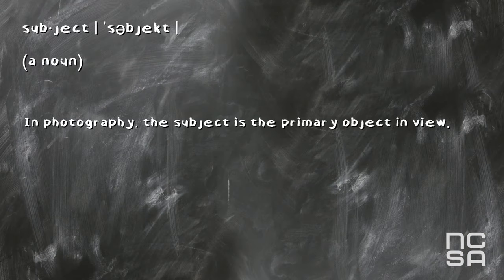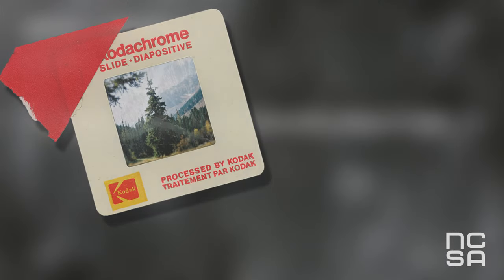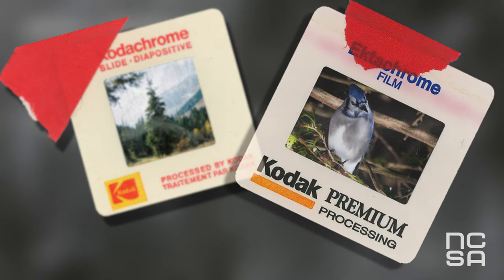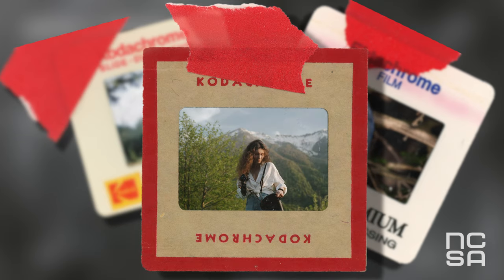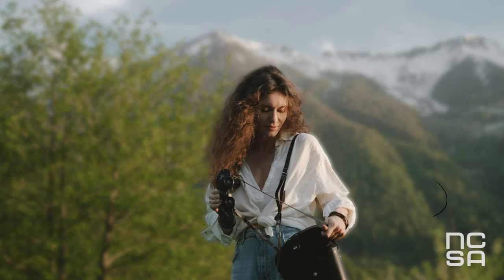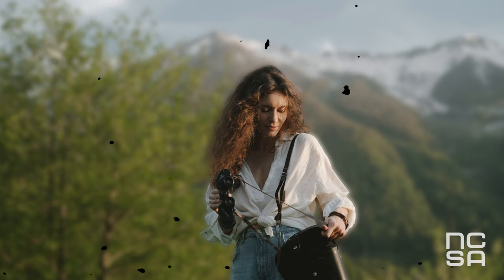In photography, a subject refers to the primary object in view. This could be a birch tree, a blue jay perched on a bough, or a person bird watching. The point is, in this scenario, the possibilities are endless. Once you establish your subject, you need to think about composition.